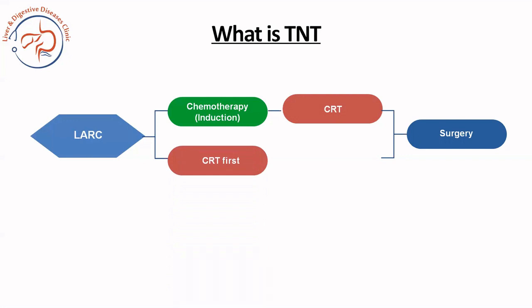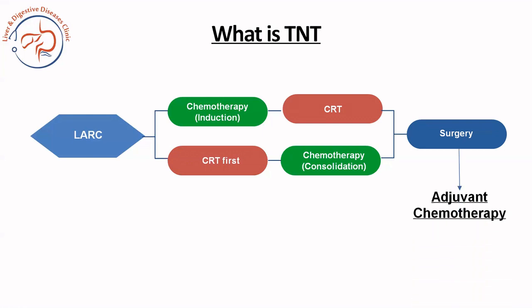When you give short course or long course radiation first and then chemotherapy, that is known as consolidation chemotherapy — because it consolidates on the benefits of radiation. Again, you can use short course or long course radiation first. So essentially there are four types: induction chemo with short course RT, induction chemo followed by long course CRT, short course RT followed by consolidation chemotherapy, or long course CRT followed by consolidation chemotherapy. The aim is to finish the entire chemoradiation therapy before surgery. Some trials are still discussing adjuvant chemotherapy and even then are considered under the umbrella of total neoadjuvant therapy.